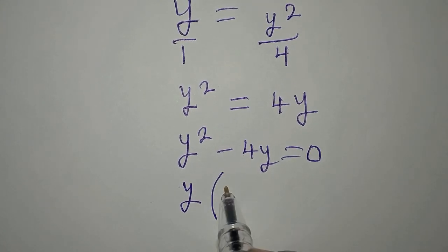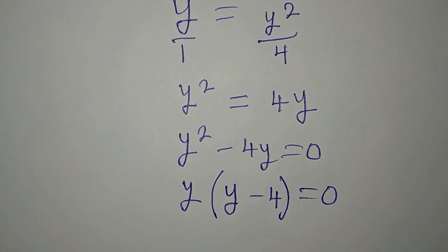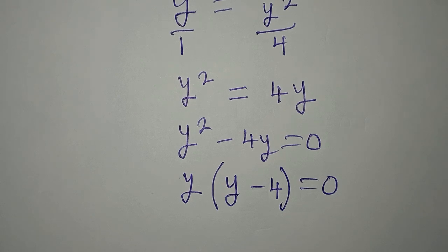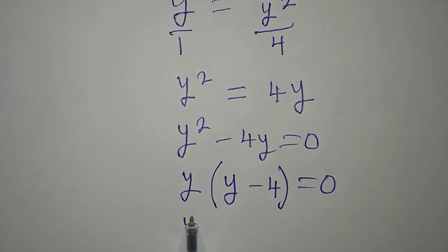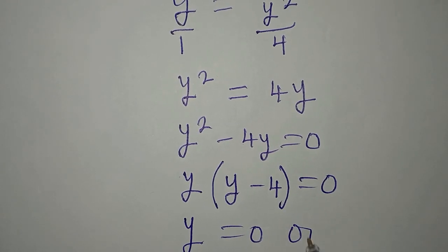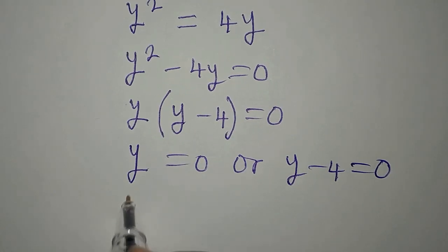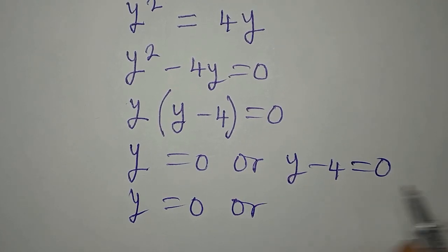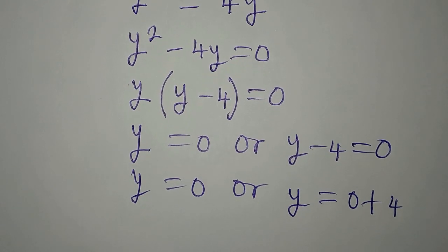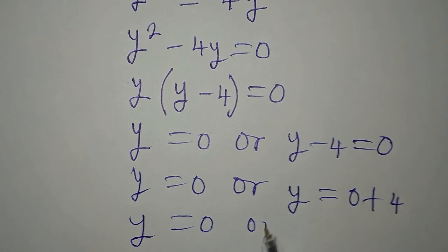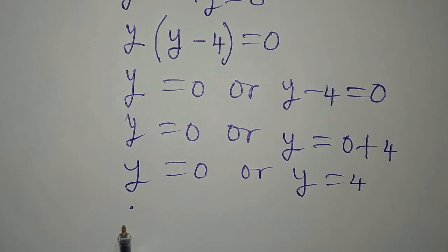What is common is y, so y comes out and we have y times y minus 4 equals 0. So we have two factors: y equals 0, or y minus 4 equals 0. From the second factor, y equals 0 plus 4, so y equals 4. Therefore y equals 0 or y equals 4.